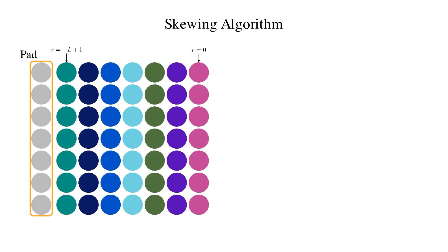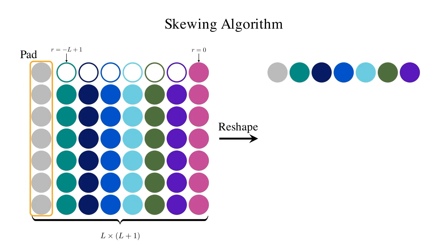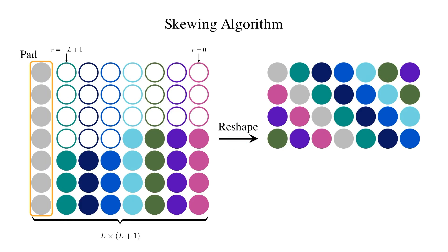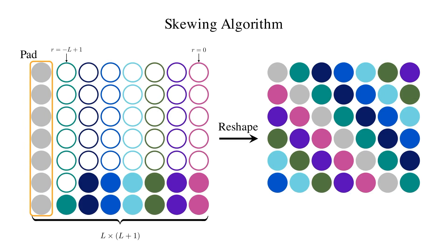First, we pad the matrix by a column vector on its left side, so we get L by L plus 1 matrix. Then we reshape this to L plus 1 times L matrix using row-major ordering. So that is taking the elements from the top row and putting them into their respective position as is being shown here.